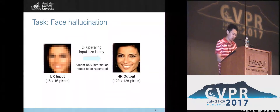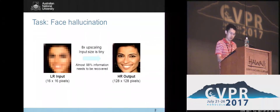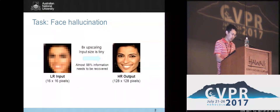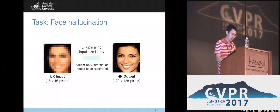Face hallucination aims at recovering high-resolution face images from low-resolution ones, thus facilitating human perception and computing analysis. When the upsampling factor is large, such as eight times, almost 98% of information is lost.